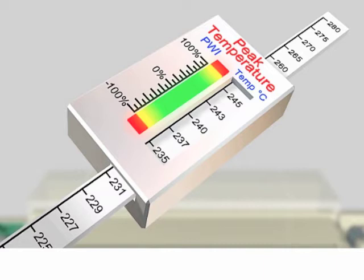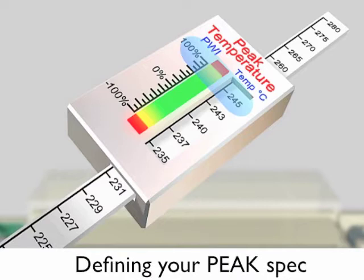You, as the process engineer, have defined peak in this example as 245°C as the maximum allowed limit for your process, and 235°C as the minimum allowed limit. This is your process window. 240°C is the center. In PWI terms, we index these values. 245°C becomes 100%, 235°C becomes minus 100%, and the center of your process window becomes 0% PWI.